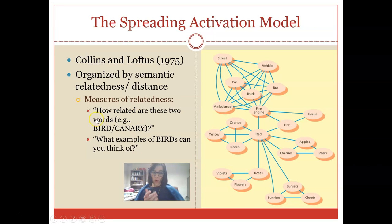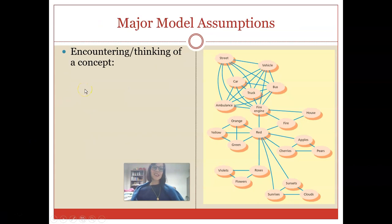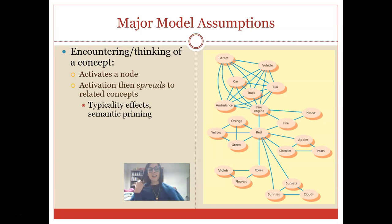The way that Collins and Loftus actually kind of worked out this model, there are two different ways that we can do this. We can look at how related two different words are, like bird and canary, or we can have people come up with as many different examples of birds as they can think of. The idea behind the spreading activation model is that if I activate a particular concept, such as the word red, activation is going to spread to nearby related concepts. Concepts that are more related to words like red, such as fire engine, orange, and fire, and cherries, are going to get more activation than objects that are not.